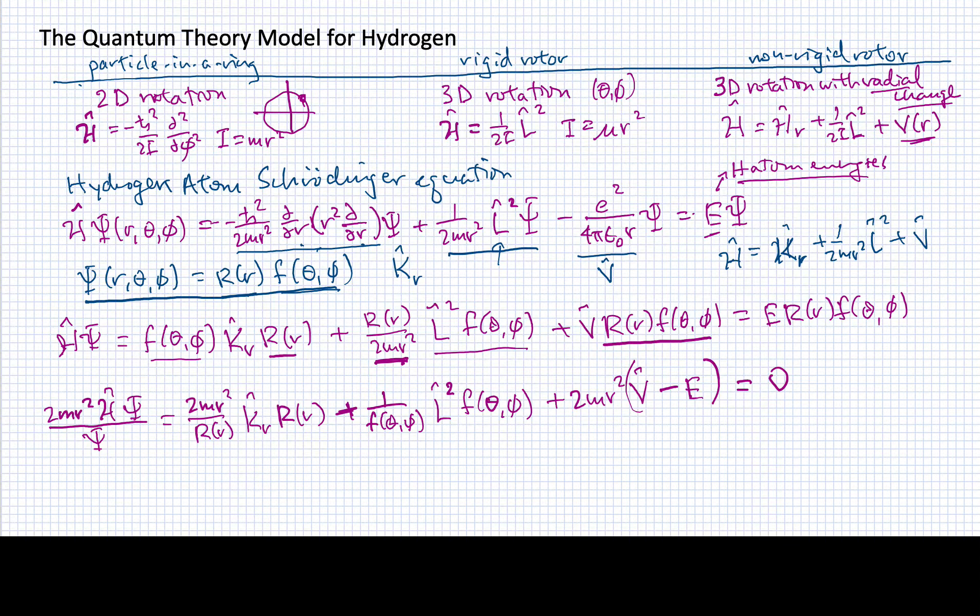What have I done here? I've got a piece that depends only on r, a piece that depends only on theta and phi, and a piece that depends only on r. In effect, I have separated this differential equation.